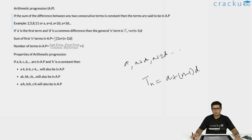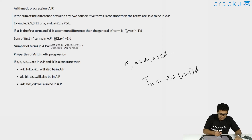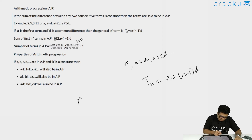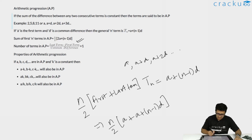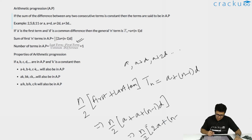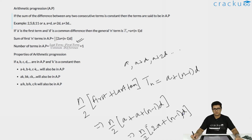Now let's look at the sum of an arithmetic progression. The sum is given as n/2 into (2a plus (n minus 1)d). This is nothing but the number of terms divided by 2 into the first term plus the last term. If we expand it using the notation learned earlier, it is n/2 into (a plus a plus (n minus 1)d), which simplifies to n/2 into (2a plus (n minus 1)d). This is the formula for the sum of n terms.